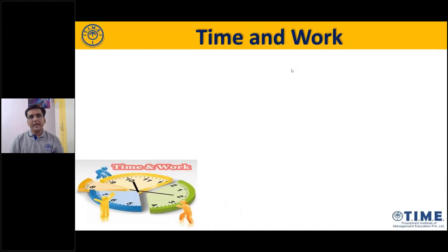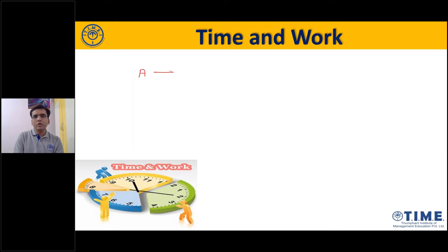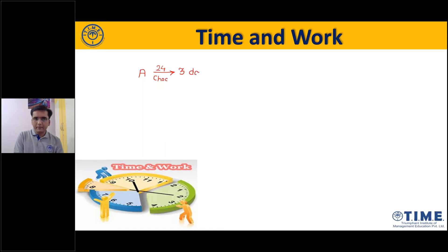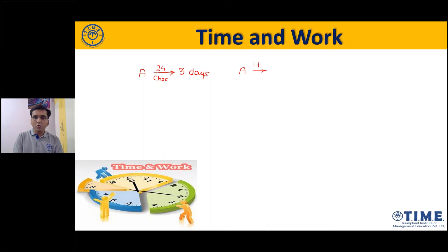See friends, in time and work, what do you need to know? Suppose one person is A, who has to do a particular work. I will give you an interesting example. Suppose A has 24 chocolates to finish — 24 chocolates in 3 days. So if A finishes 24 chocolates in 3 days, how many chocolates are finished in one day?